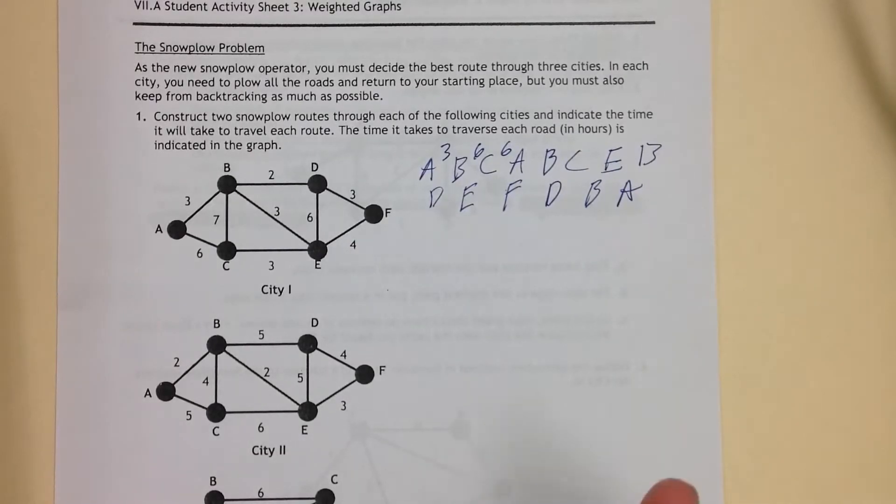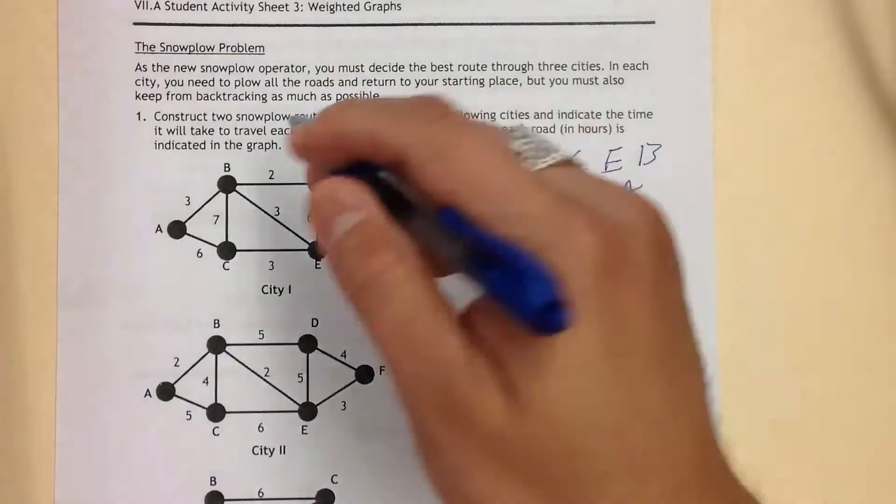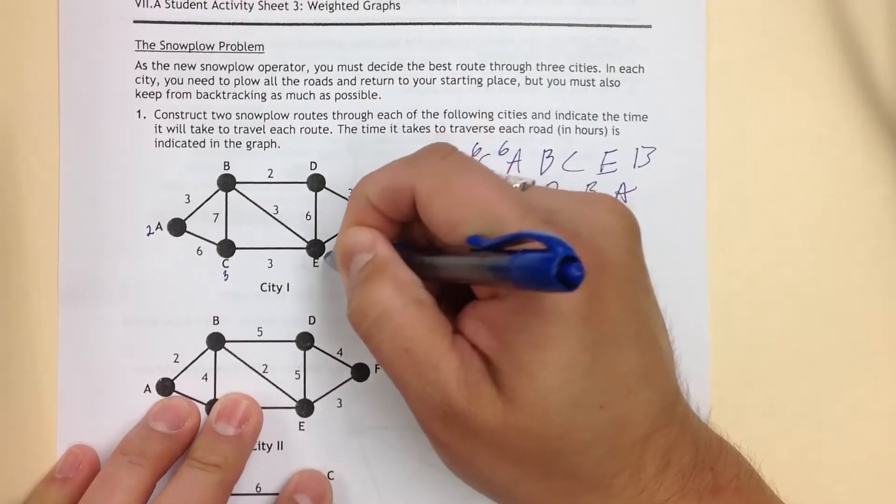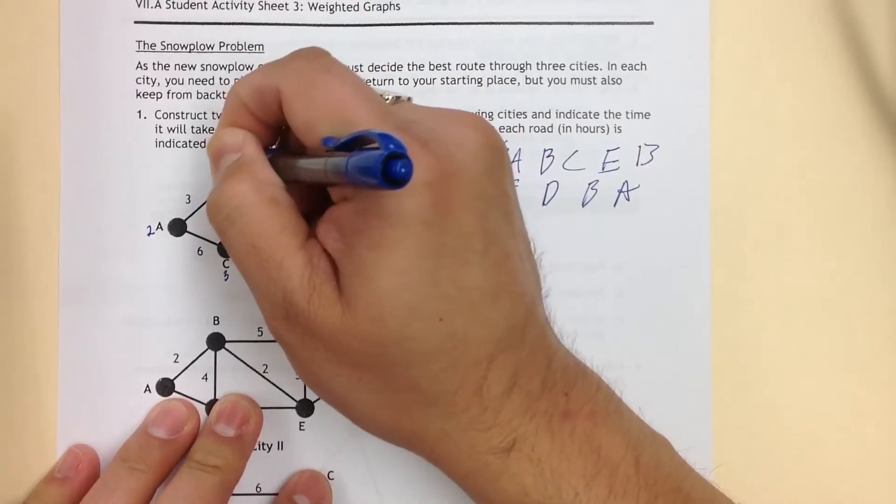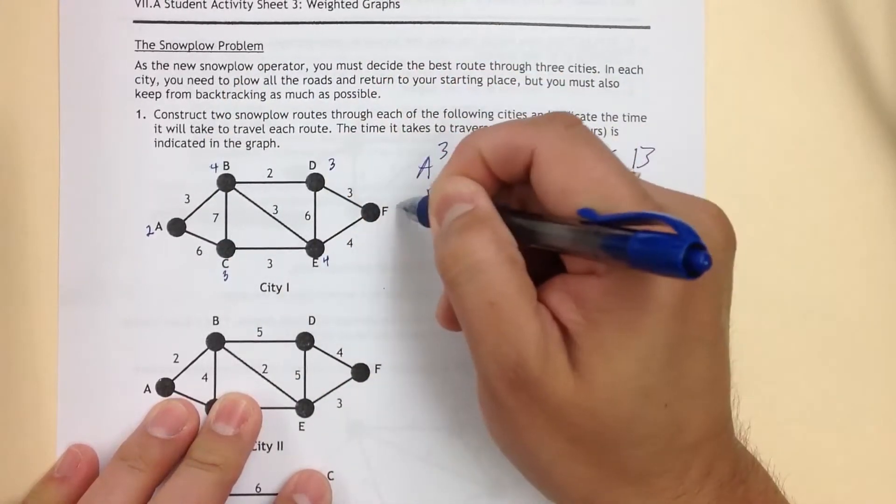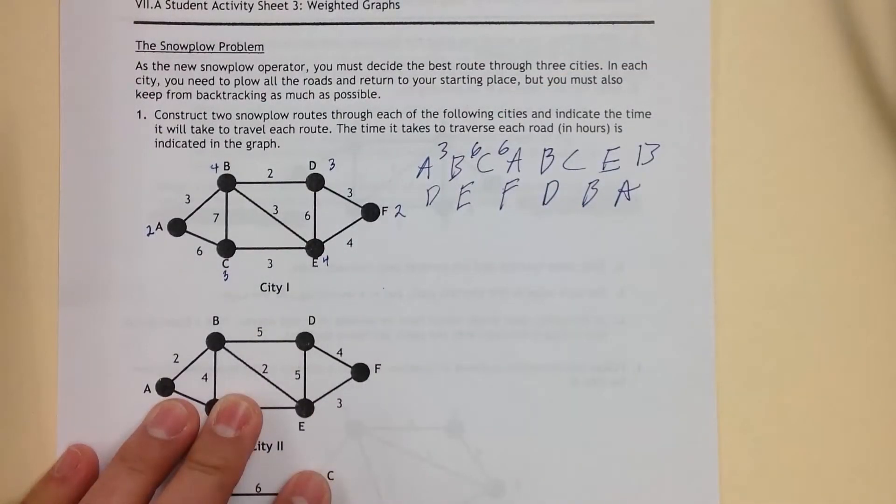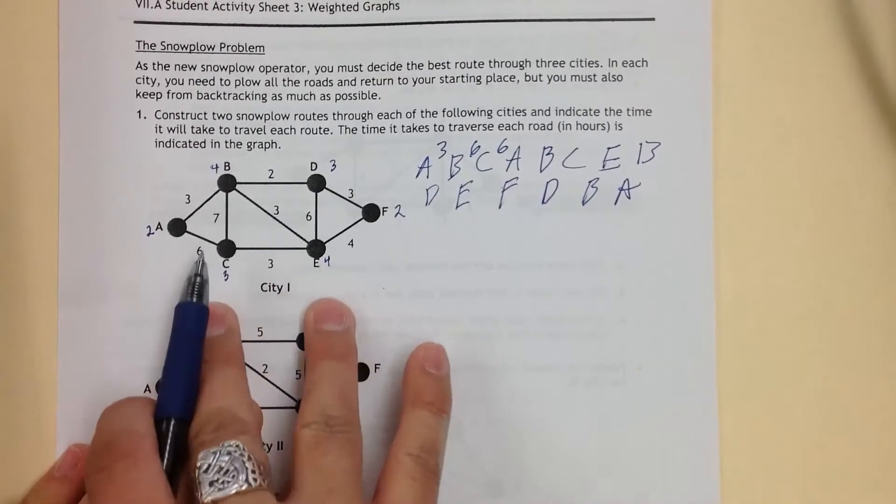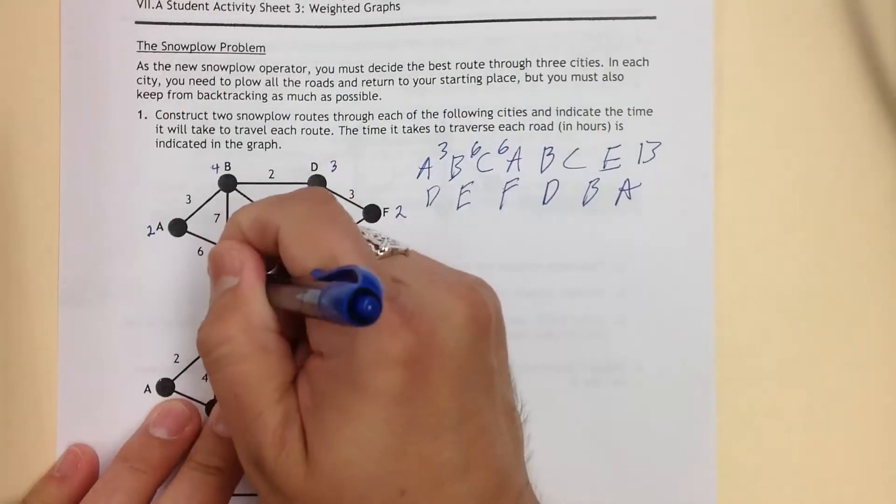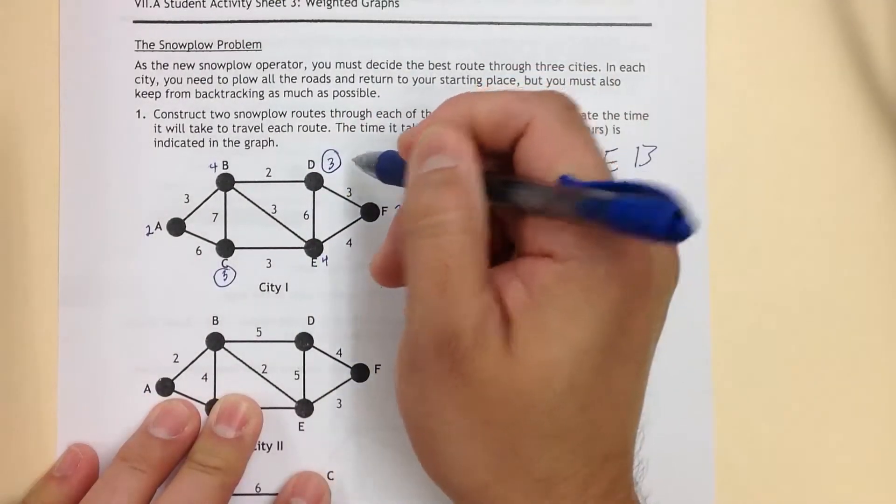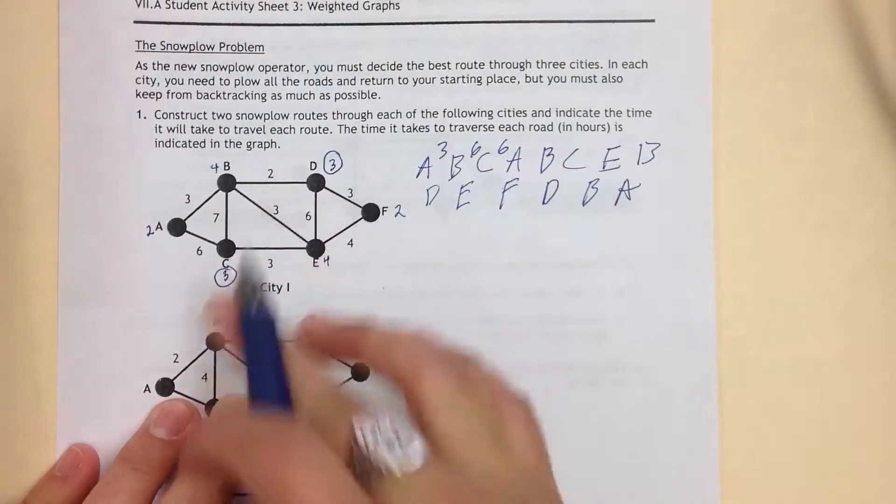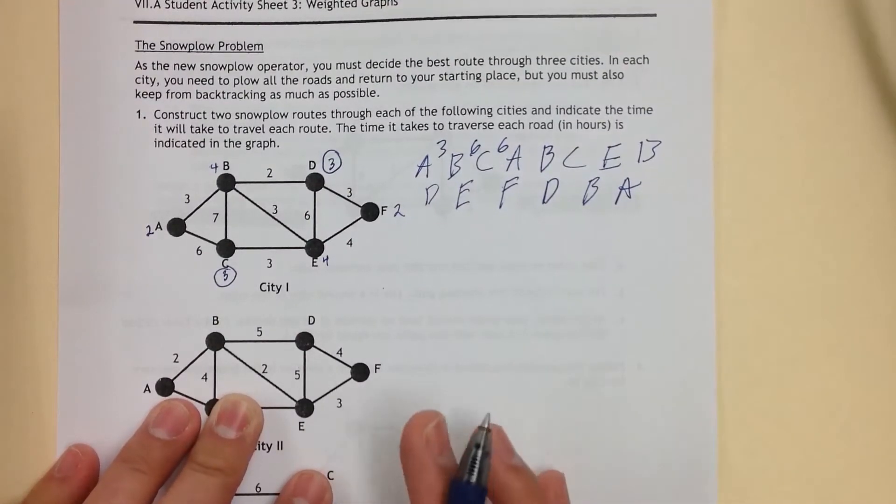So first off, we have to determine if this is an Euler circuit or path. Now, just looking at this, this has a degree of two. This has a degree of three. This one has a degree of four. This has a degree of four. This has a degree of three. And this has a degree of two. So ways to determine if this is an Euler path or circuit, you can just take a look at the numbers. See right here, this one's odd and this one's odd. And those are the only two odd nodes. So if you see two odd nodes, this is an Euler path. So we're going to say, since this is an Euler path, there's no circuit to this. But we're going to modify this to do a circuit.